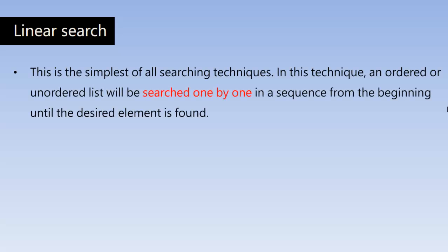So first we will understand the linear search then we get into the actual C programming code to implement the same. So this is the simplest of all searching techniques where it uses ordered or unordered list and we are going to search for an item in the list or an element in the list in the sequence. The list will be searched one by one in a sequence from the beginning until the desired element is found.